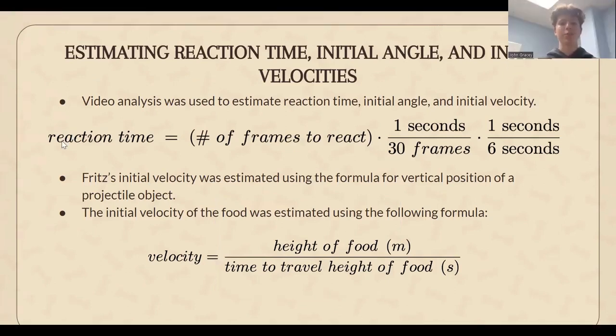To tailor our model to Fritz, we utilized this video analysis to come up with a fixed reaction time for the dog, as well as a fixed value for the initial angle and velocity of the food. We selected three different clips from the video. Reaction time was found by counting the number of frames that it takes for Fritz to begin his motion up toward the food, then dividing this by the frame rate and the slow motion speed of the recording. Fritz's initial velocity was found by timing the dog's entire jump, then substituting that value of time into the equation for vertical position of a projectile and solving for V0. The initial velocity of the food was found using a simple distance over time formula, for which we estimated the height of each food so that we would have a measurable distance for our calculation. All three of these calculations were done for all three selected video clips, and the mean value of each was used in our model.